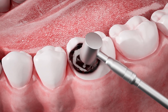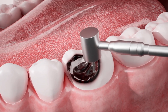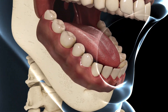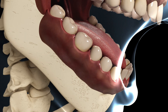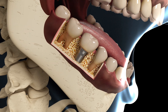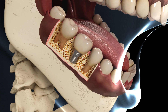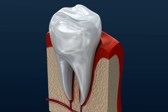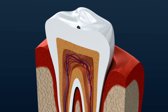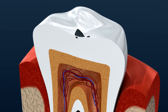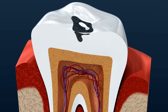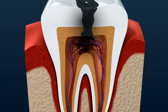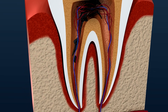Proper dental care after your cavity treatment is essential. Maintain excellent dental hygiene by brushing twice daily, flossing regularly, and using fluoride toothpaste. These dental tips help prevent future cavity symptoms and protect your healthy teeth. Regular dental checkups every six months allow your dentist to catch tooth decay early, often before you experience any cavity symptoms. Early detection means simpler cavity treatment and better tooth care outcomes.